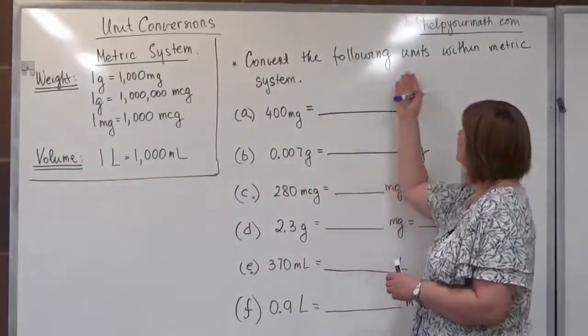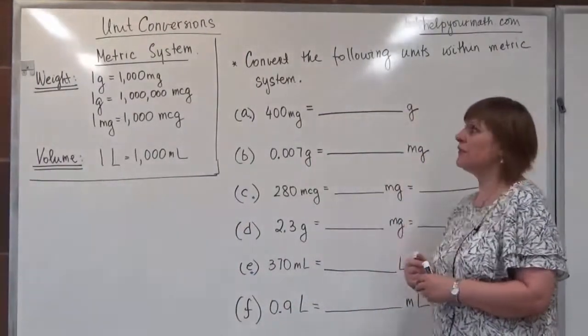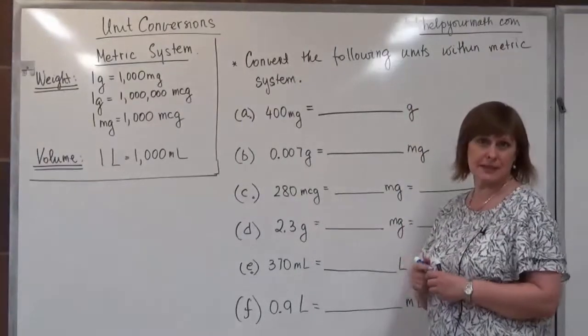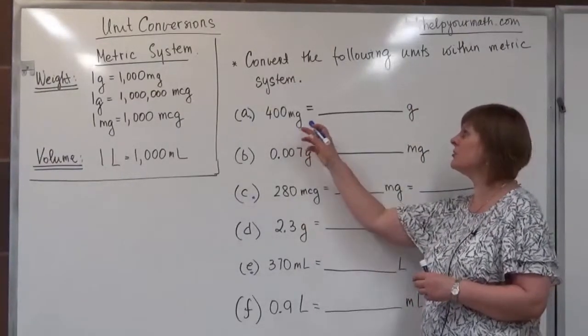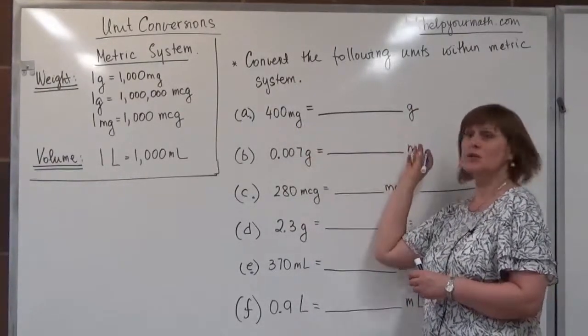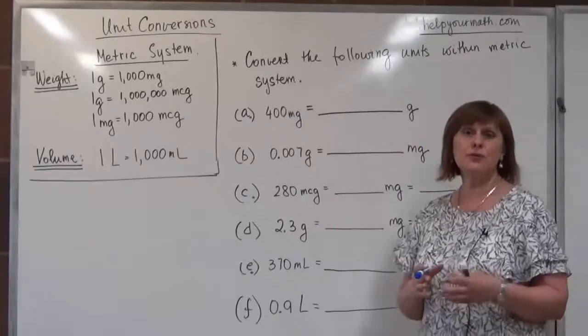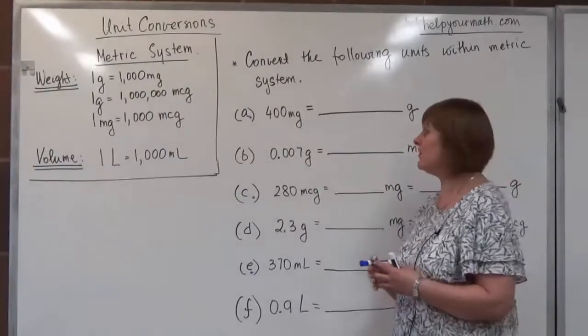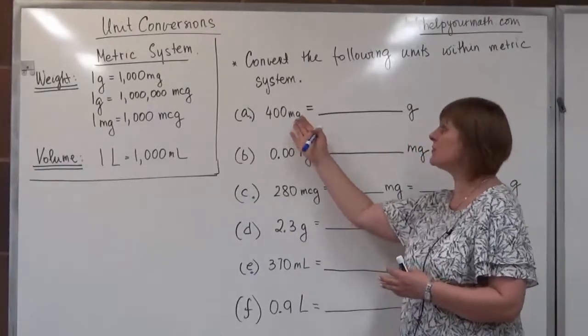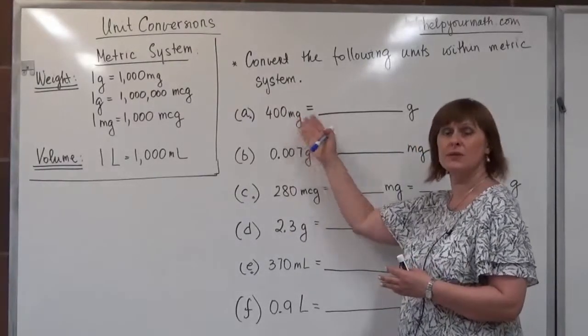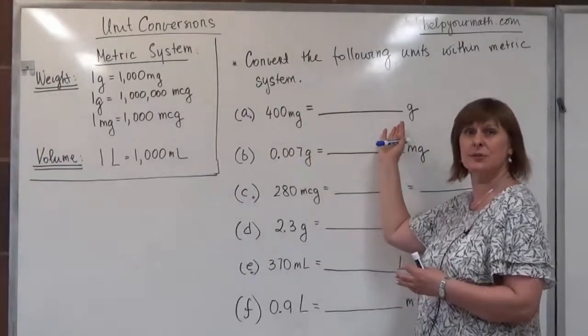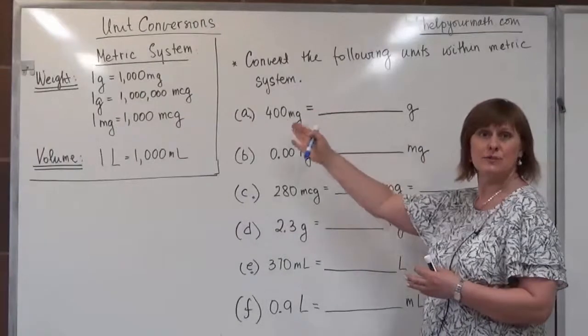Convert the following units within the metric system. We need to convert 400 milligrams to grams. First of all, we want to keep in mind that we are converting from a smaller unit to a larger unit — milligram to gram.